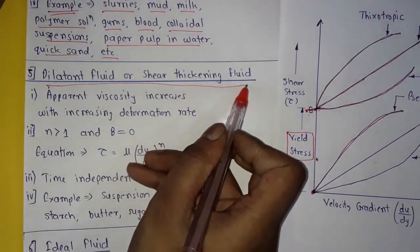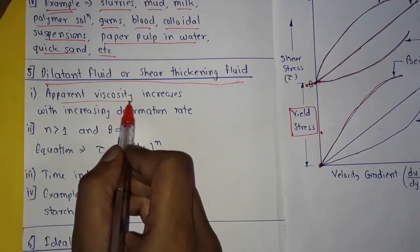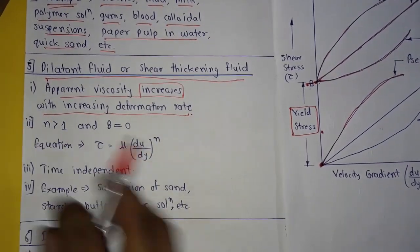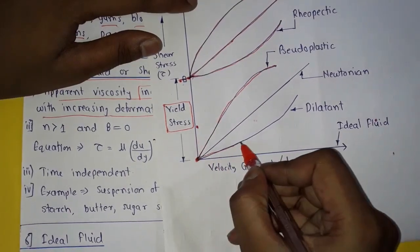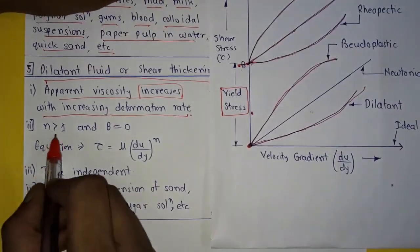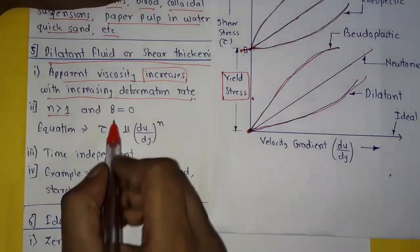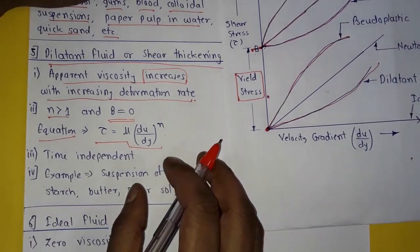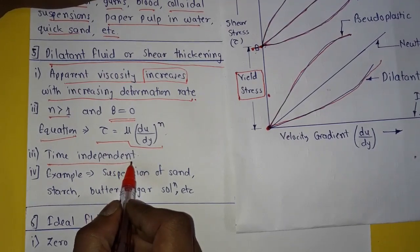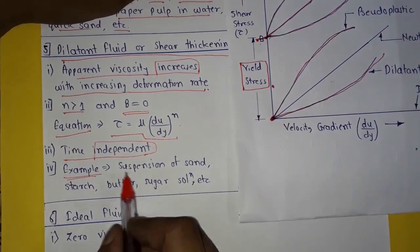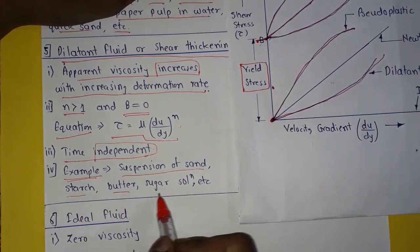The fifth type is dilatant fluid or shear thickening fluid. Its apparent viscosity increases with increasing deformation rate. It is represented as a curve starting from the origin on the shear stress versus velocity gradient graph. Here, n is greater than 1 and b is equal to 0, so the general equation becomes: tau equals mu times (du/dy)^n. It is a time-independent fluid. Examples are suspension of sand, starch, butter, sugar solution, etc.